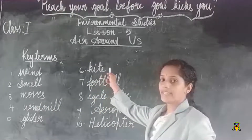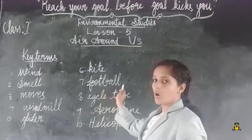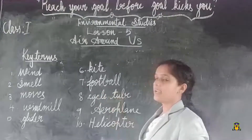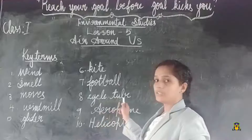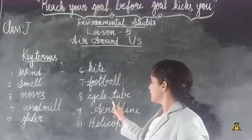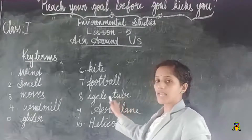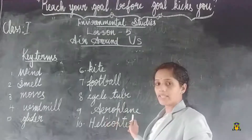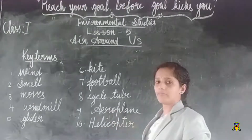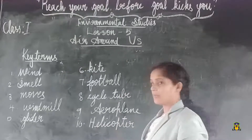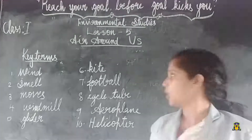Next, kite. K-I-T-E. Kite. Football. F-O-O-T-B-A-L-L. Football. Cycle tube. C-Y-C-L-E T-U-B-E. Cycle tube. Aeroplane. A-E-R-O-P-L-A-N-E. Aeroplane. Next, helicopter. H-E-L-I-C-O-P-T-E-R. Helicopter.